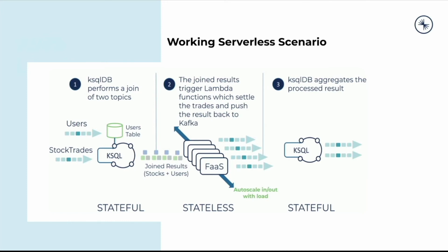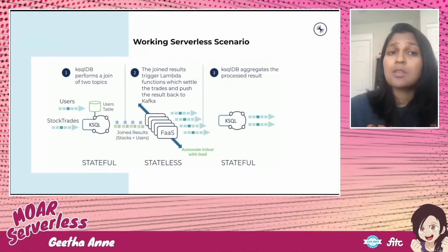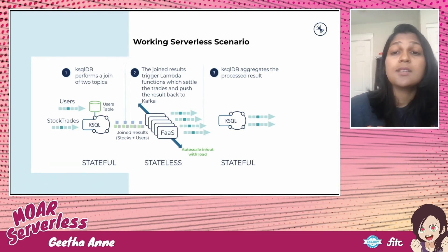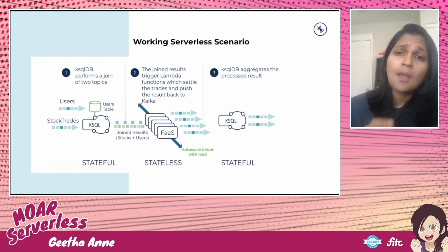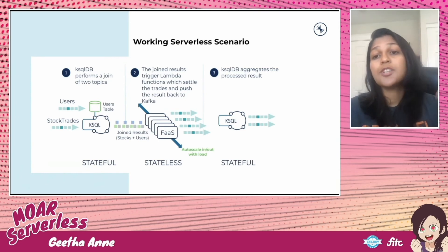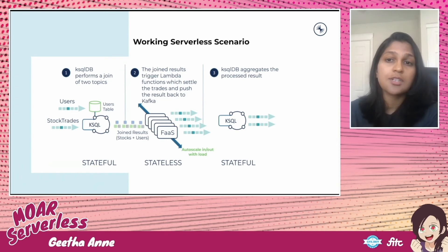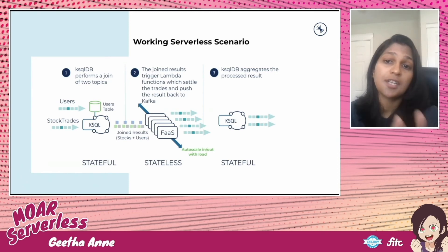ksqlDB has additional long-running queries to analyze the results of Lambda output. The application running on Confluent Cloud is a stock trade application, where the stock trade stream represents simulated stock trades. SQL code is written to create a table out of the streams, and then ksqlDB performs a left outer join to create a stream-table join. This join enriches the stock trade data with user data to execute the trade. We use a left outer join so that we always have the trade information, regardless of whether the user information exists or not.